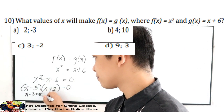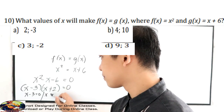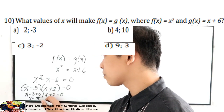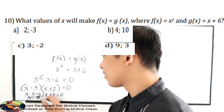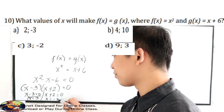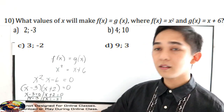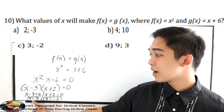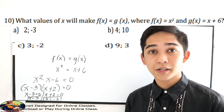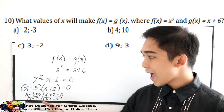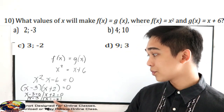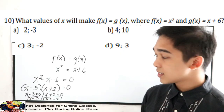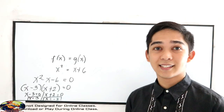Equating each factor to 0: x is equal to negative 3, and x is equal to positive 2. These are the values of x that will make our functions equal. So the answer for number 10 is letter C.